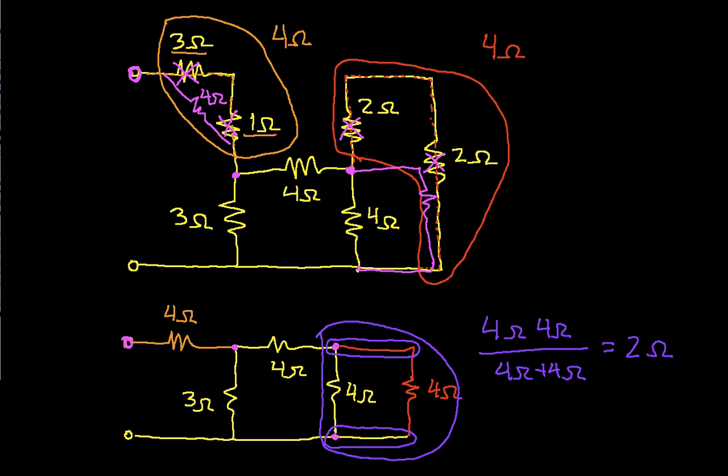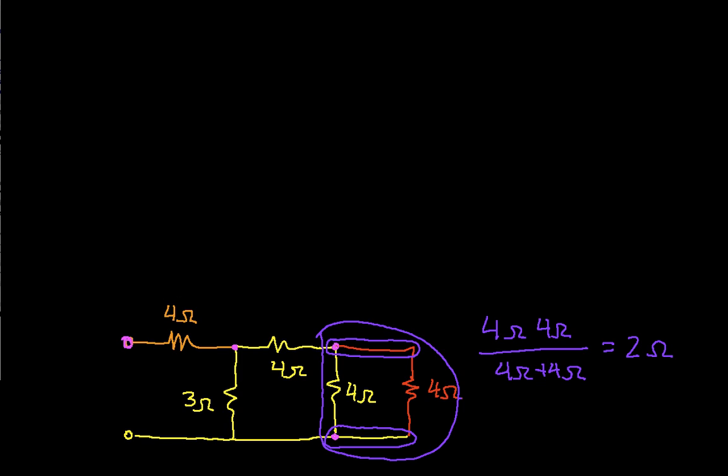And to do that, we'll clear up some space up here. So now when I redraw my diagram, I still have this 4 ohm resistor. It's connected to the 3 ohm resistor and the 4 ohm resistor. And I now take the two 4 ohm resistors in parallel and replace them with a single 2 ohm resistor. And everything else is the same.